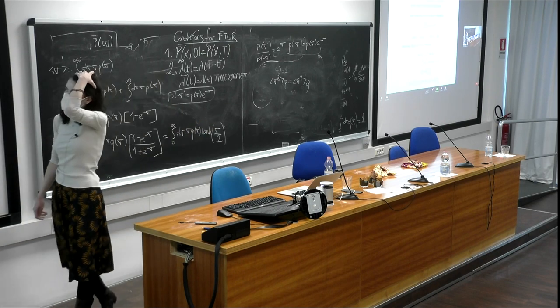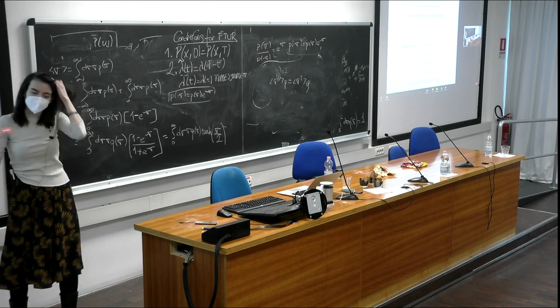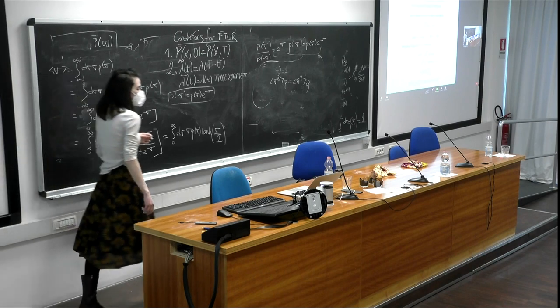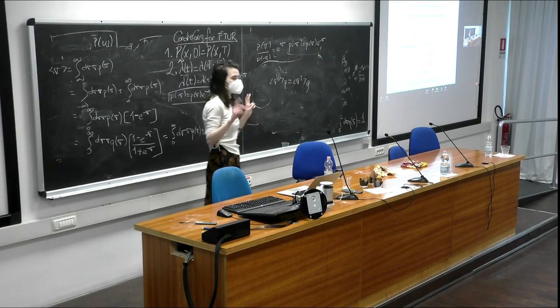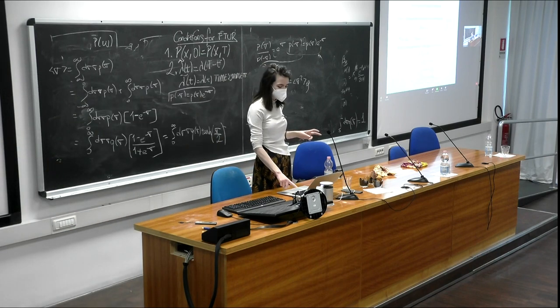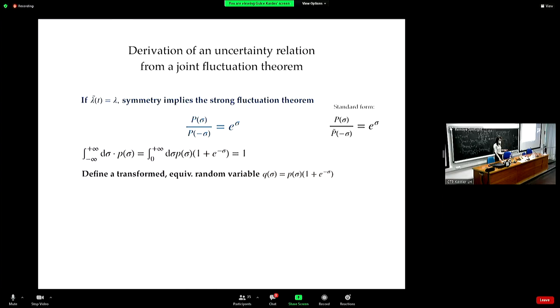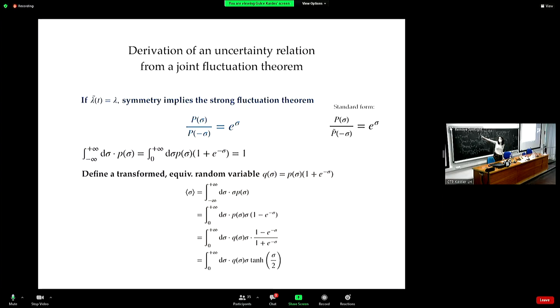One thing we had was the other strong fluctuation theorem. It's this one — it only includes one random variable: entropy production.